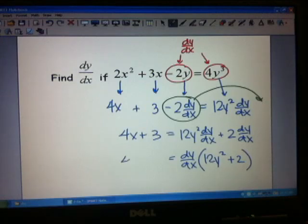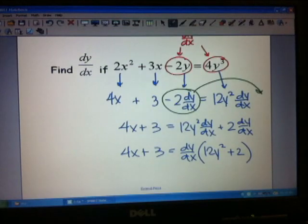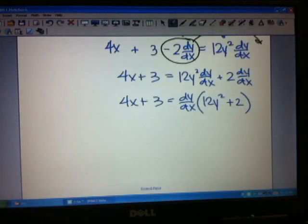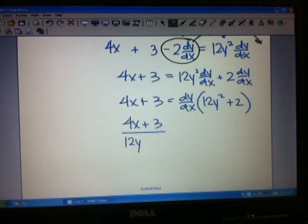And now I just need to divide both sides by 12y squared plus 2 to get dy/dx isolated. So I'm going to have 4x plus 3 over 12y squared plus 2 is equal to dy/dx.